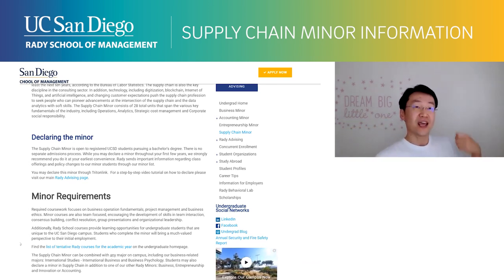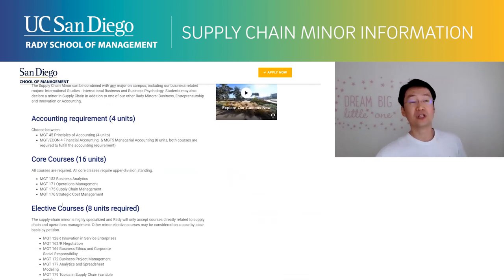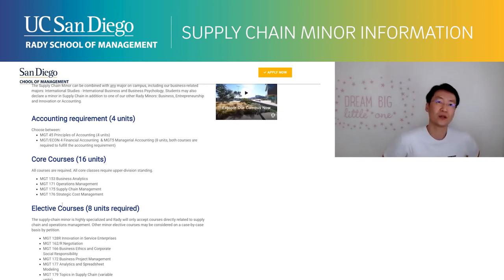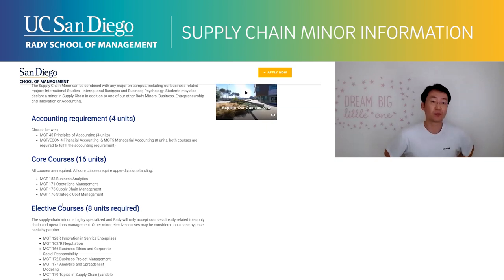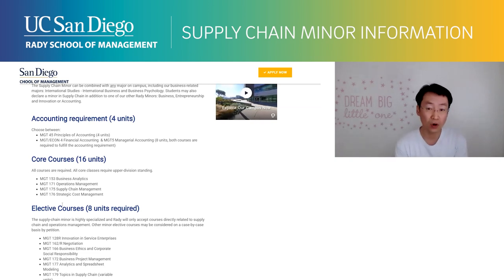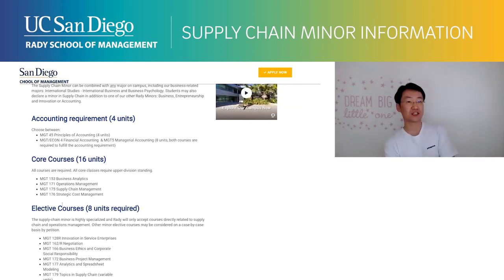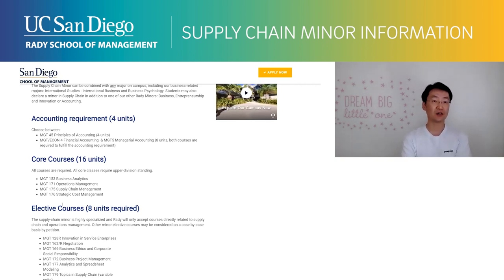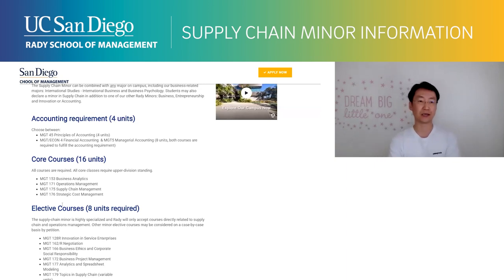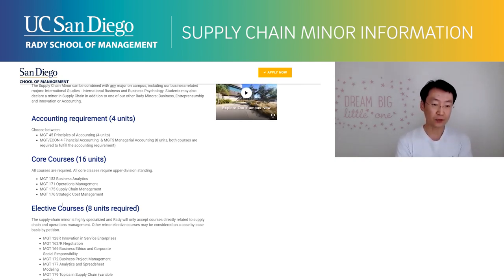To actually earn the minor, you take six courses: one accounting class, four core classes taught mostly by Chris and Zal, and elective courses including MGT 172 Business Project Management, MGT 166 Business Ethics, and MGT 162 Negotiations — all offered pretty much every quarter. Additional courses MGT 177 and MGT 128R will be offered next year; MGT 128R is a remote-only class offered every spring. With that, I'll conclude the supply chain minor introduction and open up the floor for questions.